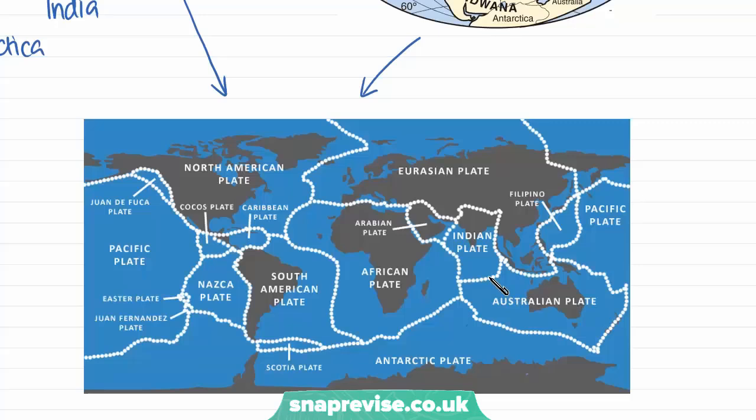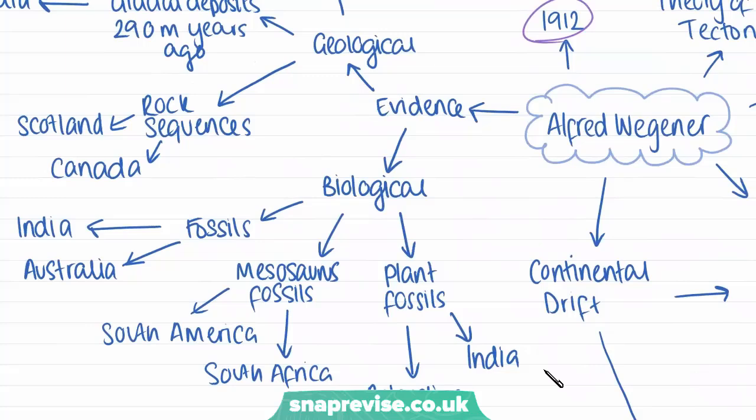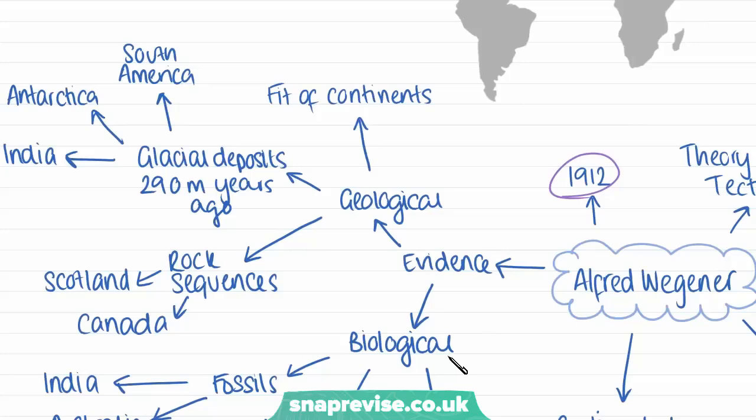We also have smaller plates, which include the Arabian plate, Indian Nazca, and the Caribbean plates. At this point, Alfred Wegener had not suggested how these plates moved, but he suggested that they had moved — and that's what's important to know about his theory of plate tectonics. He had a lot of evidence to prove that the continents have moved over time, and this was part of both geological evidence and biological evidence.